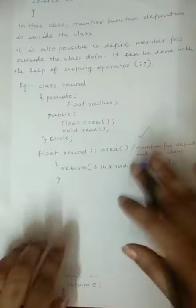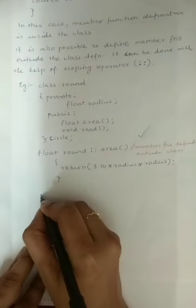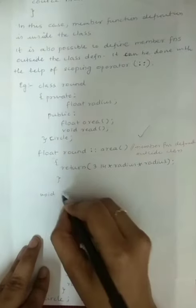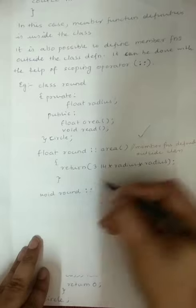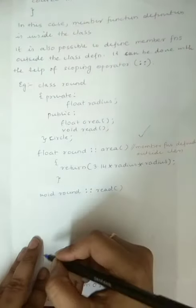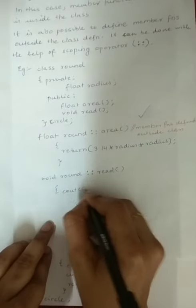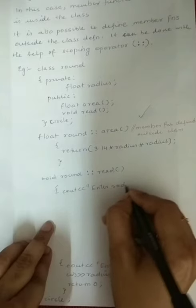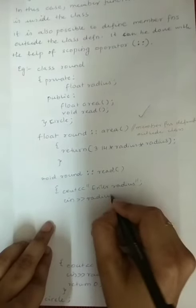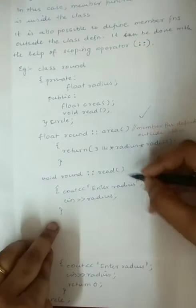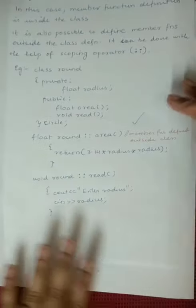To define the `read` function outside the class, first write the return type `void`, then the class name `round`, then the scoping operator `::`, then the function name `read`. Open the braces and write the body — for example, `cout` to prompt for the radius and `cin` to read it. This is how you define the `read` function outside the class.